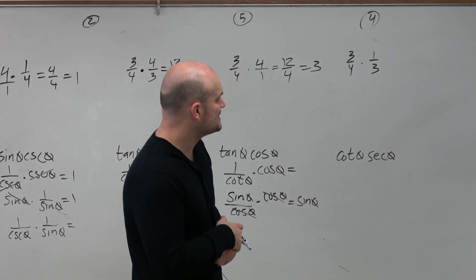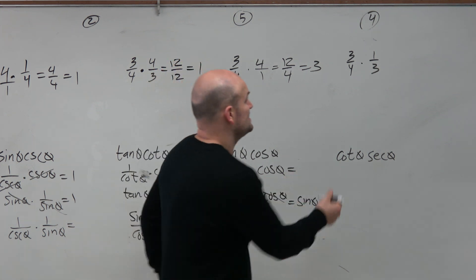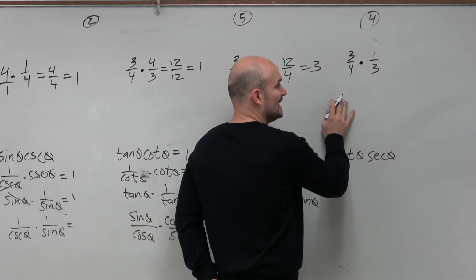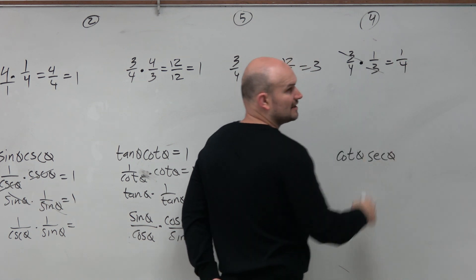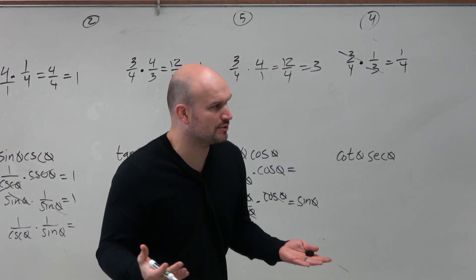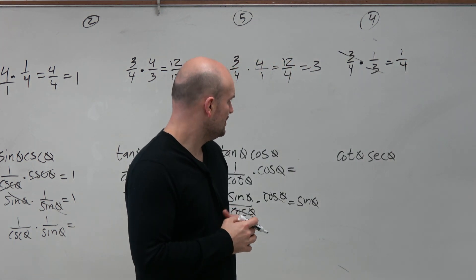Next example, 1 third times 1 fourth. You could multiply across, right? But since everything is multiplied by multiplication, couldn't you just divide out those threes? And that's essentially what we're doing. So in this case,